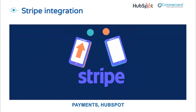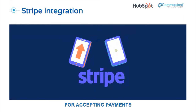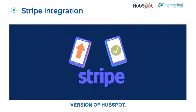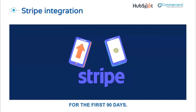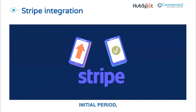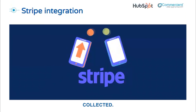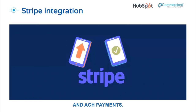One quick side note as we wrap up payments: HubSpot also allows for Stripe integration. The option for accepting payments through HubSpot via Stripe integration is compatible with the free version of HubSpot. If you enroll in Stripe integration before December 31st, 2023, you can enjoy the benefit of not having to pay anything for the first 90 days. There is a waitlist you can join to get this integration. After the initial 90-day period, Stripe charges a platform fee of 0.5% on each payment collected, plus standard or negotiated fees on credit card and ACH payments.